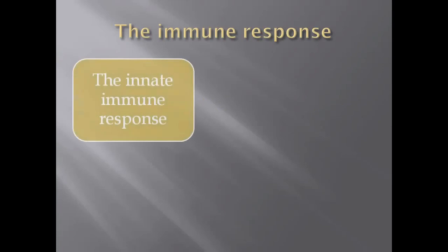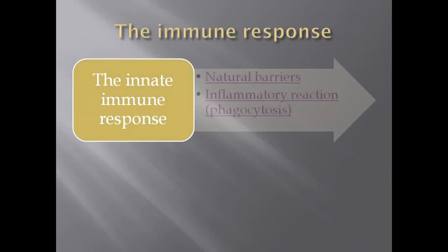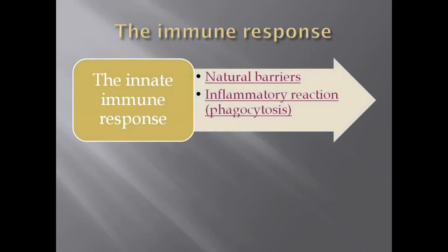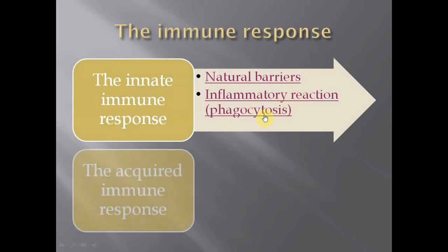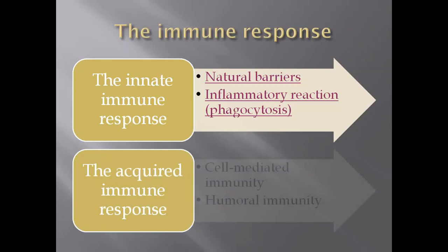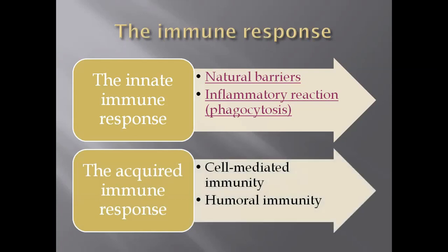What are the types of the immune response? The immune response can be classified as either innate, which is a non-specific immune response that is regardless of the identity of the intruder, and its weapons are the natural barriers as well as the inflammatory reaction or phagocytosis. The second type is the acquired immune response, which is dependent on the identity of the intruder, and thus it is specific, and it is either cell-mediated or a humoral immune response.